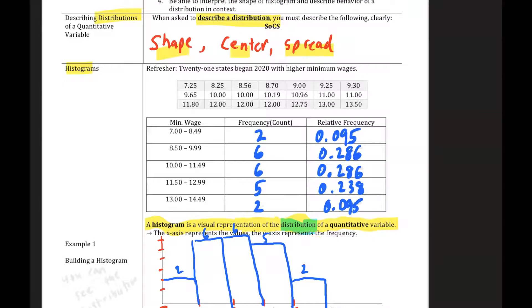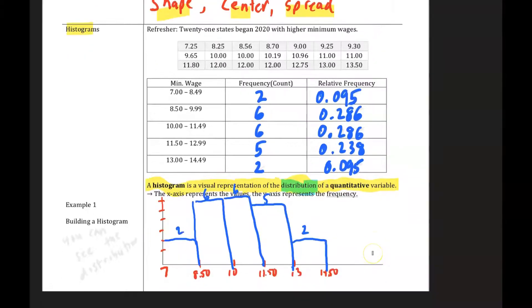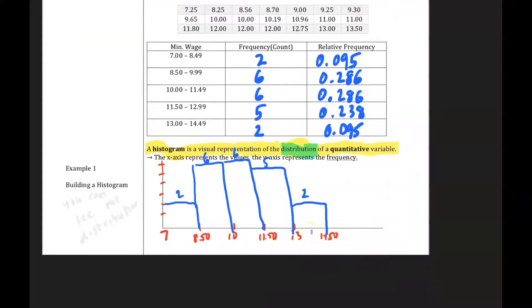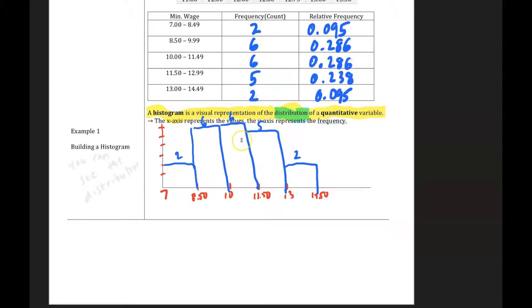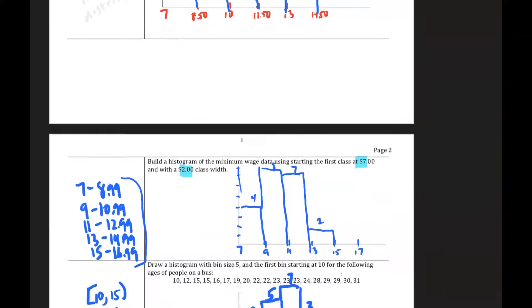And so what you can see here is the distribution. Remember, we describe the distribution with shape, center, and spread, but really what that is, is what are all the possible values the variable can take? How often do those values occur? So you can see the values are between $7 and $14.99, and then you can see how often they occur. And so that's how we would build the histogram, but I want to remind you, we will be using technology to build that.